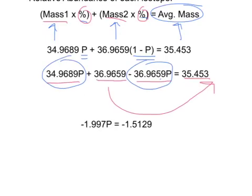Combining like terms, we get negative 1.997p is equal to negative 1.5129. This is good that both sides are negative because we want p to be a positive number because there's no such thing as negative percentages.